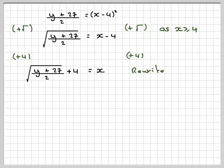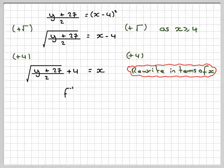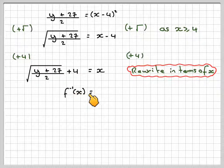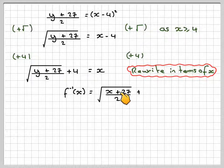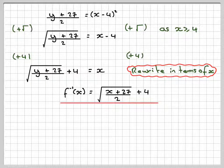We now rewrite this as the inverse function in terms of x. So f⁻¹(x) = √((x + 27)/2) + 4, which is the answer.